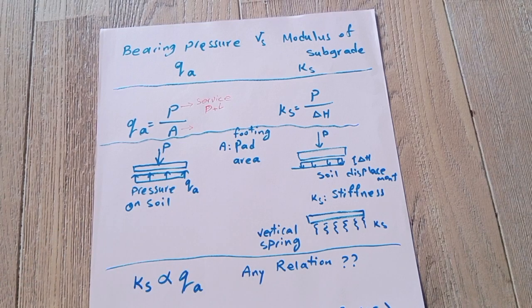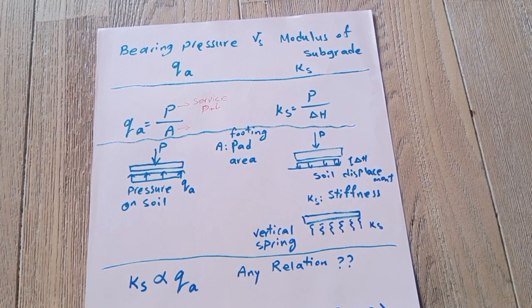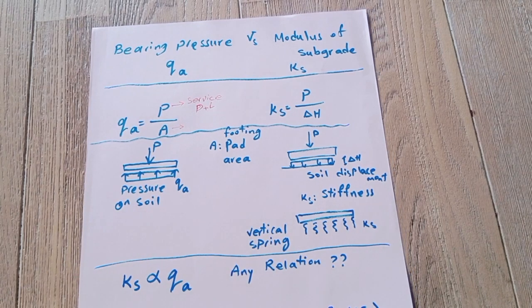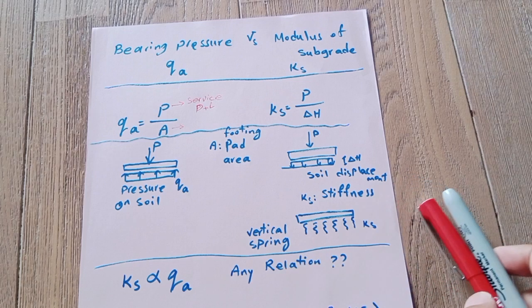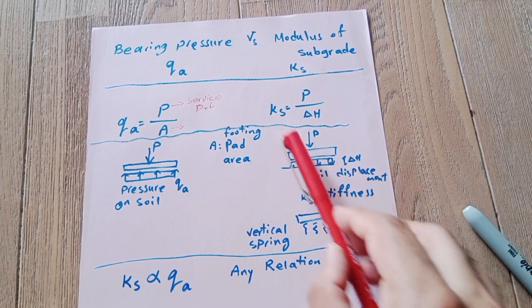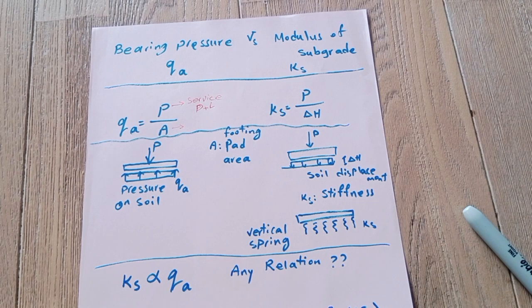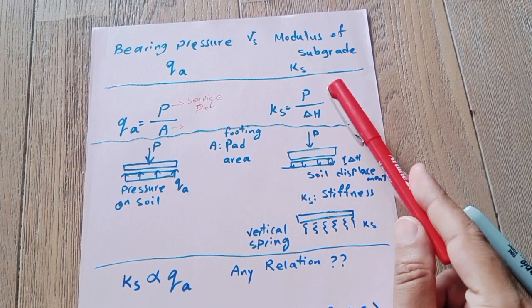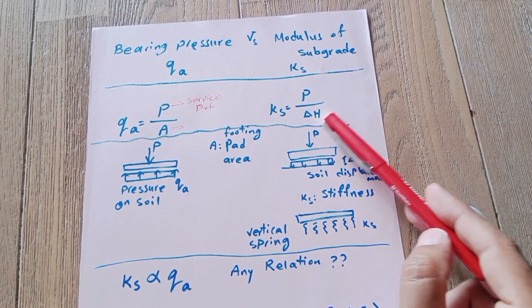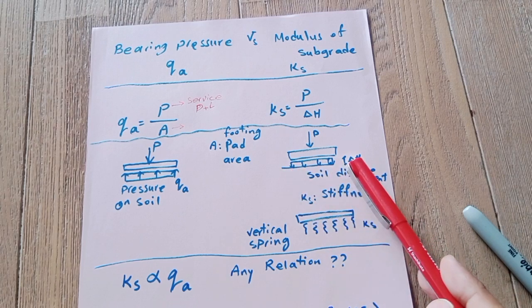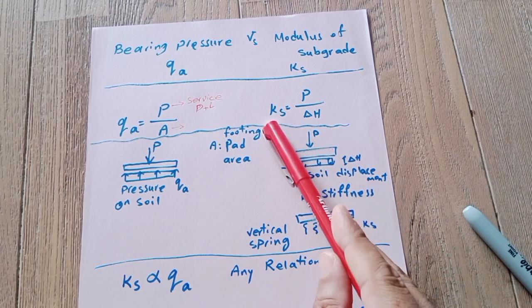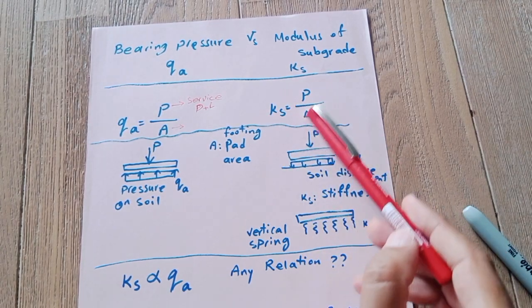We can use any units to interpret that qa. On the other side, we have stiffness for ks—stiffness factor or subgrade modulus—that is resultant from applied load P on the pad that produces settlement delta h in the soil.